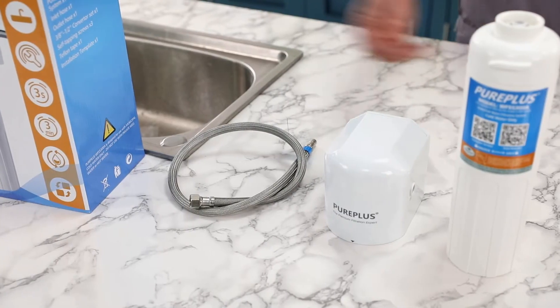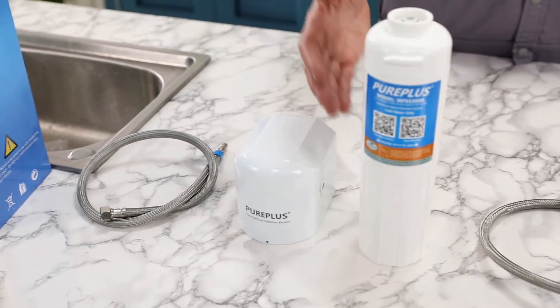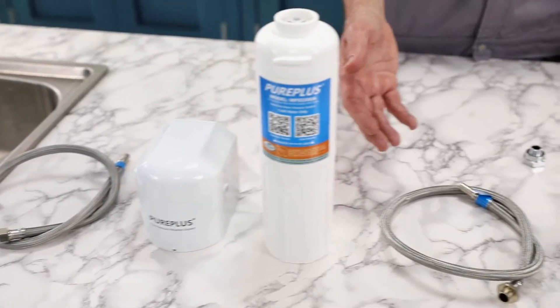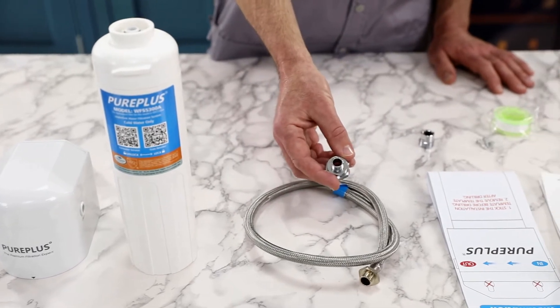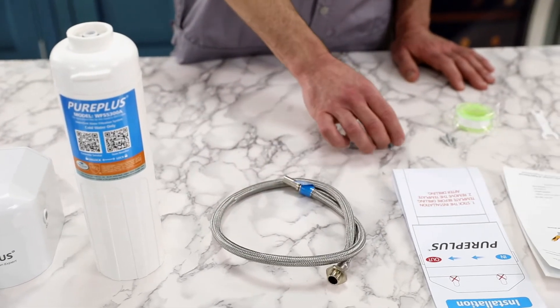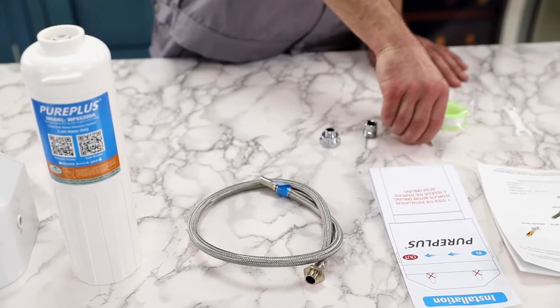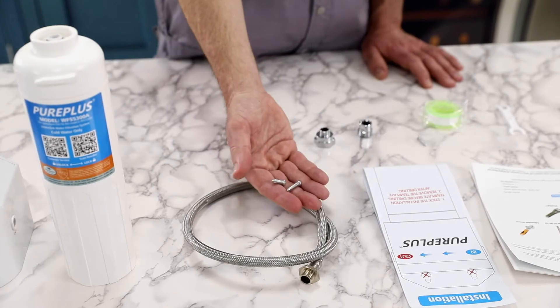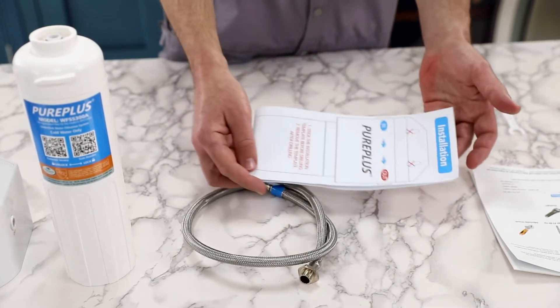Prepare accessories: Inlet Hose, Filter Head, Filter, Outlet Hose, 1/2 inch FIP to 3/8 inch Compression, 3/8 inch Compression to 1/2 inch FIP, 2 mounting screws, Installation Template.